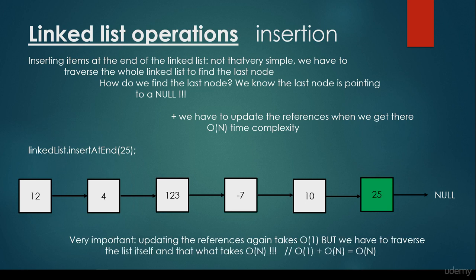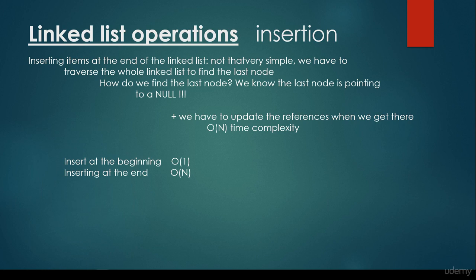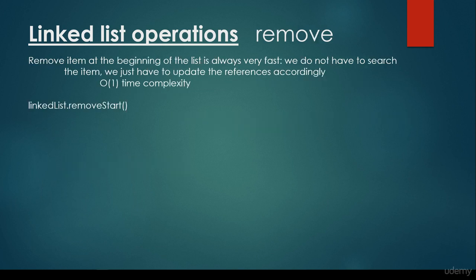Updating the references takes constant time complexity, but first we have to traverse the list, and that takes O(n). So O(1) plus O(n) is equal to O(n). That's why inserting items at the end of the LinkedList takes O(n) linear time complexity, while inserting items at the beginning of the LinkedList takes O(1) constant time complexity. Inserting at the beginning is O(1), inserting at the end is O(n), so linear time complexity. What about remove?